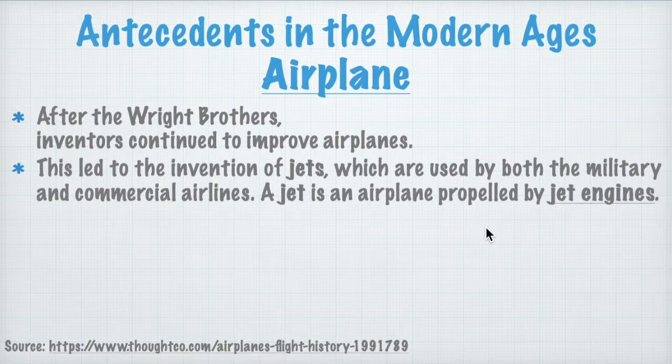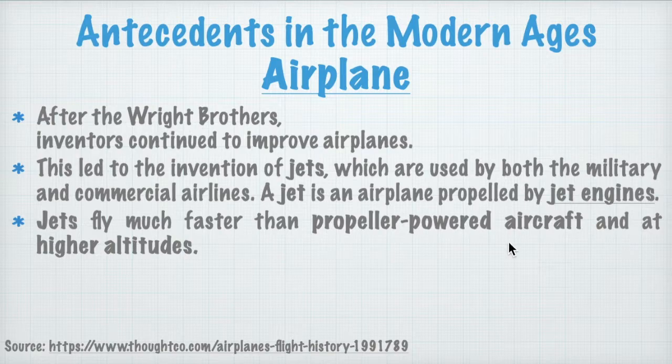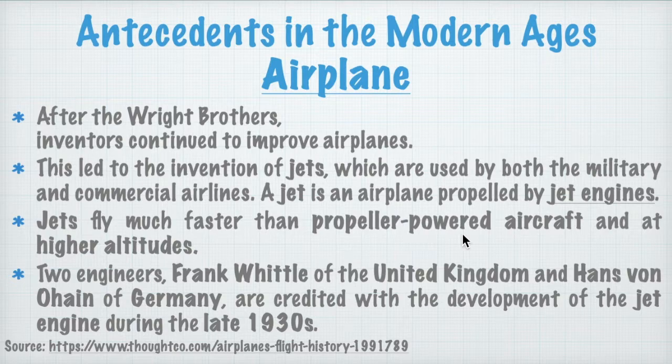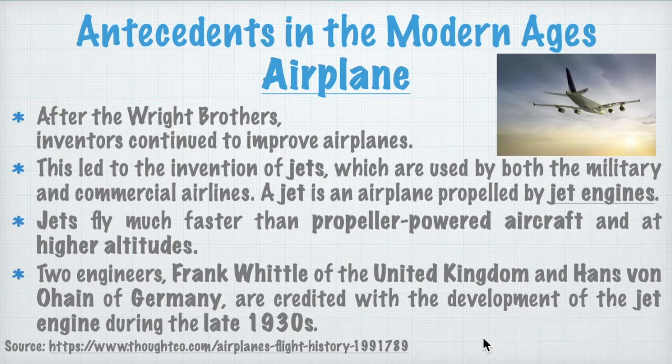A jet is an airplane propelled by jet engines. Jets fly much faster than propeller-powered aircraft and at higher altitudes. Two engineers were credited with the development of the jet engine: Frank Whittle of the United Kingdom and Hans von Ohain of Germany. It was during the late 1930s that they started developing jet engines.